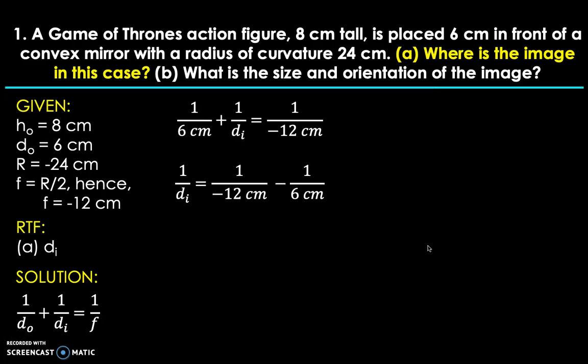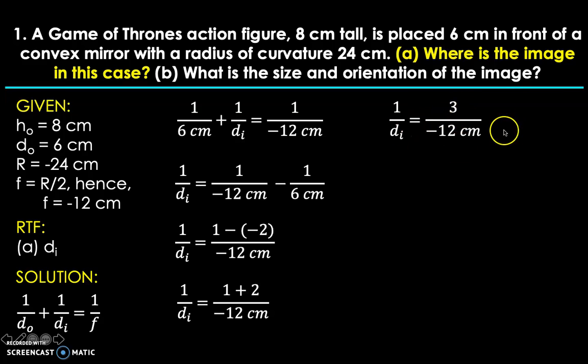Now you can deal with this using your calculator, but the alternative way would be to do this manually. If you want to do it manually, the first thing you have to do is get the least common denominator of negative 12 and 6 centimeters. That would be negative 12. Then negative 12 divided by negative 12 times 1 becomes positive 1. And negative 12 divided by 6 is negative 2 times 1, so that's negative 2. Then just affix the minus sign. So 1 minus negative 2 will give us positive 3, and negative 12 is still affixed.